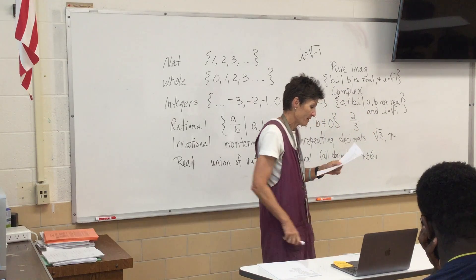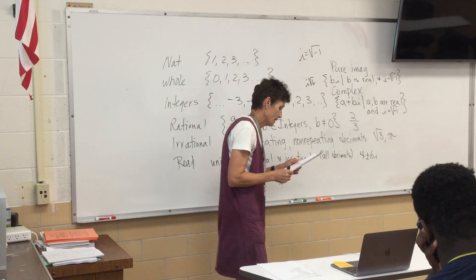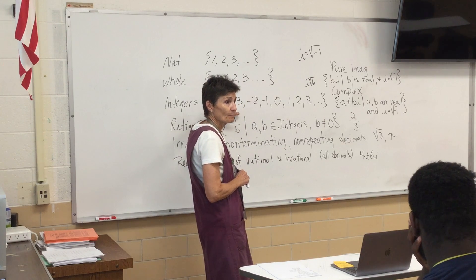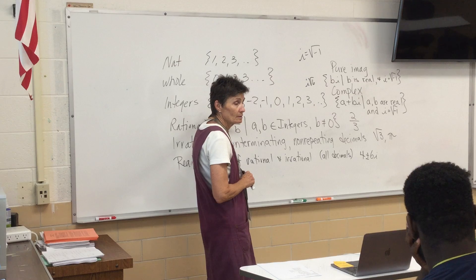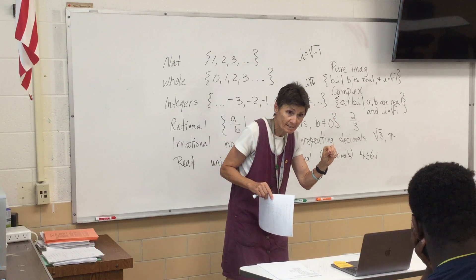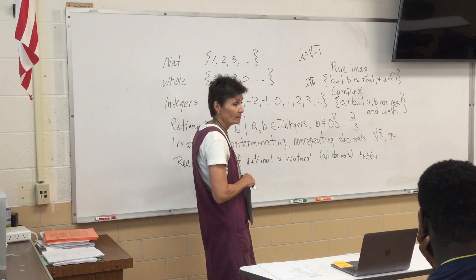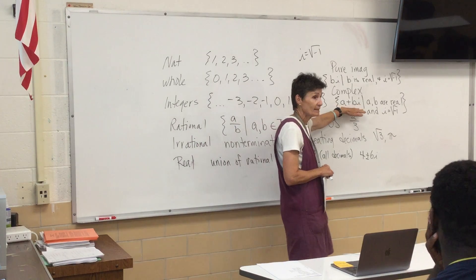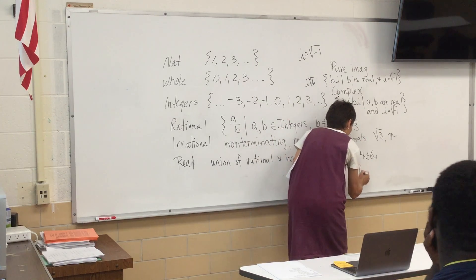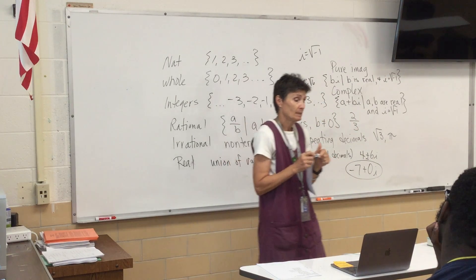Let's see how much we picked up on that. Number 2: to which number sets do the following belong? Negative 7 — negative 7 is an integer. It's also rational, because negative 7 is negative 7 over 1. It's a real number, and it is a complex number — because couldn't you think of negative 7 as negative 7 plus 0i?